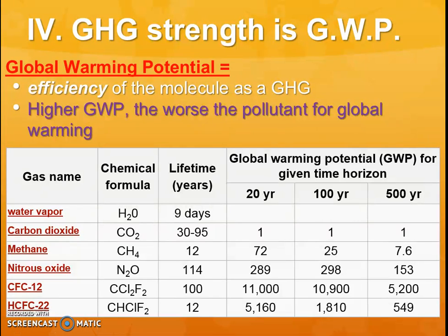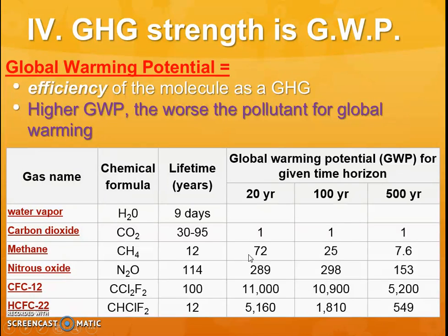Methane lasts a lot longer in the atmosphere compared to carbon dioxide or water vapor — this is how long one molecule would stay in the atmosphere. On top of that, it is so much stronger at warming the earth. We rank methane at 72 times as warming as carbon dioxide. That is scary, but it is less frequently found in the atmosphere. Still, it is a lot stronger at warming the globe.